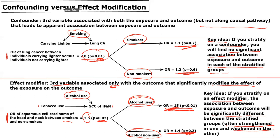So unlike with a confounder, where the association was eliminated in both stratified groups, if you stratify on an effect modifier, you will see that the association under study is significantly different between the two stratified groups — statistically significant and often strengthened in one group, and no longer statistically significant and often weakened in the other.